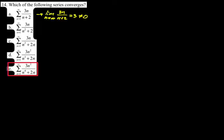Number 14: which of the following series converges? For option A — 3n over n plus 2 — the limit is 3, not zero, so by the nth term test it diverges. For the next ones I look at dominant terms: 3n over n squared is basically one over n, which diverges; 3n squared over n cubed is also basically one over n, which diverges. But 3n squared over n to the fourth gives one over n squared, which converges. So the answer is E.